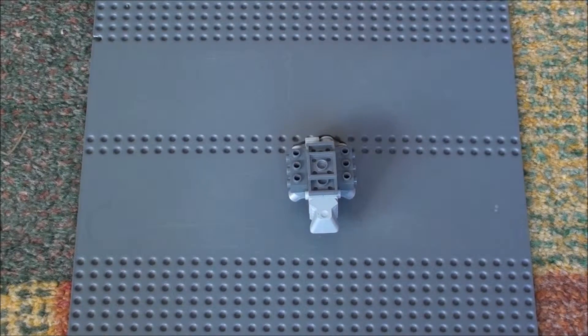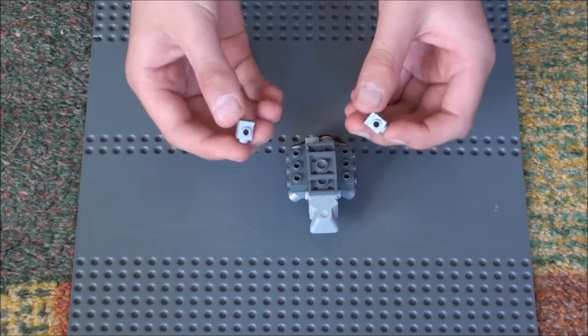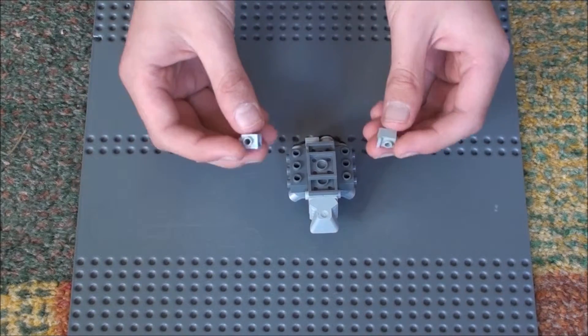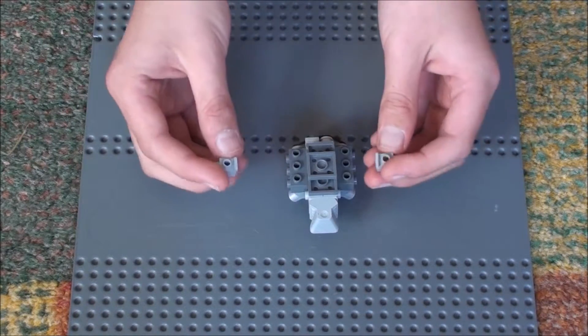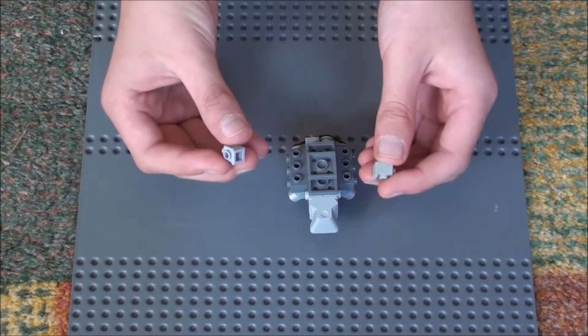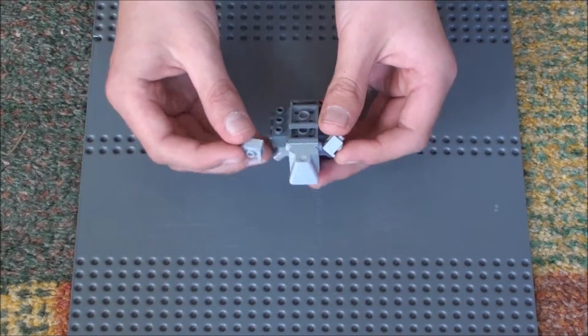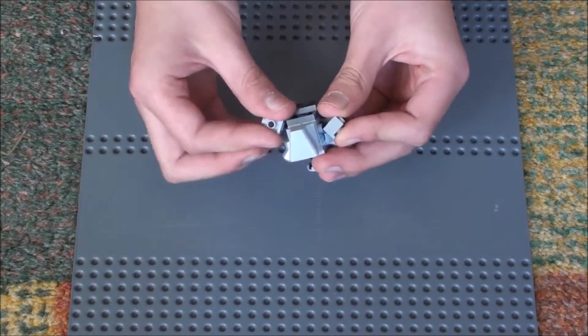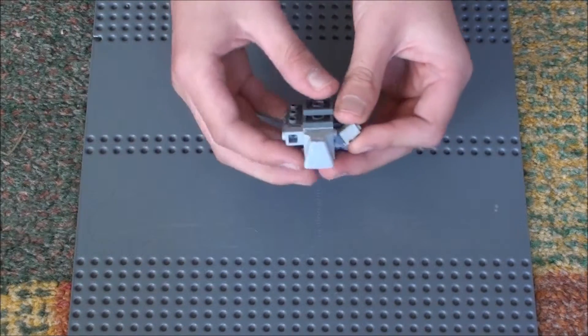And then these 2 headlight side pieces with a little underhang. And instead of putting them on like that, you turn them around and put them on like that.